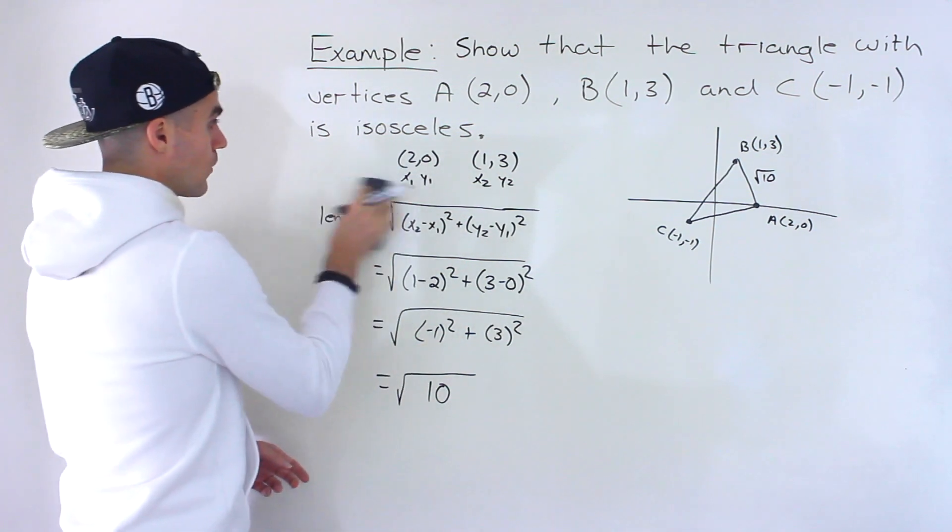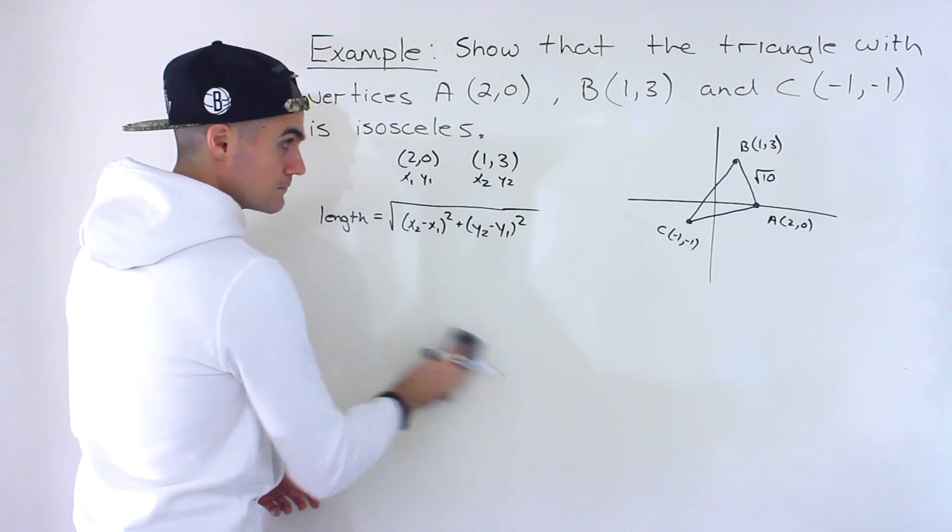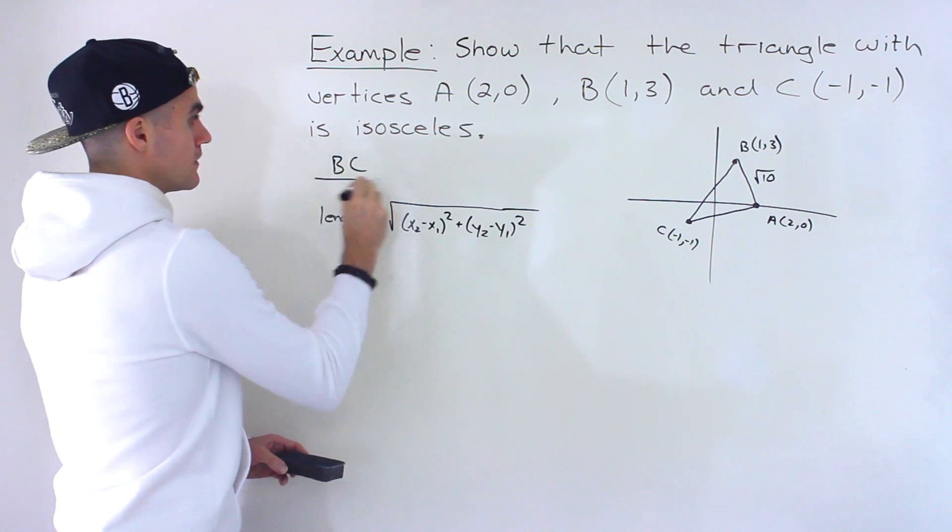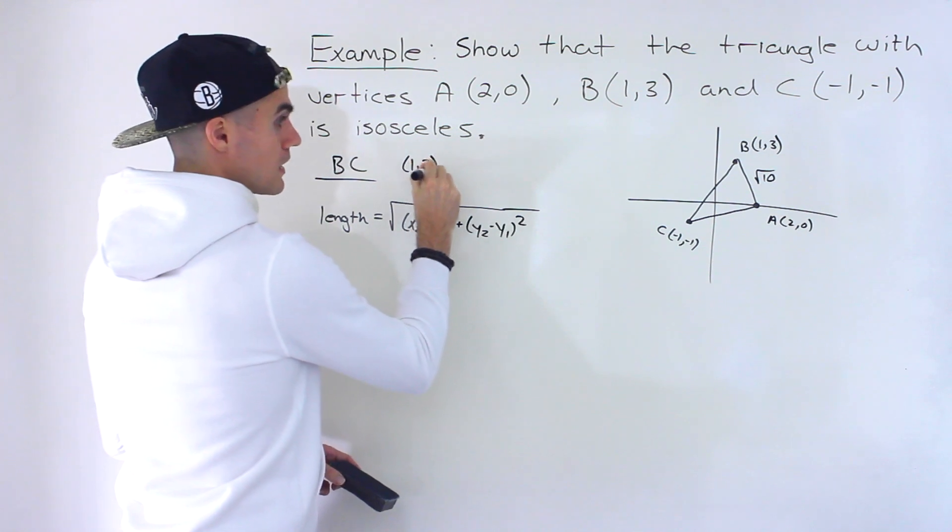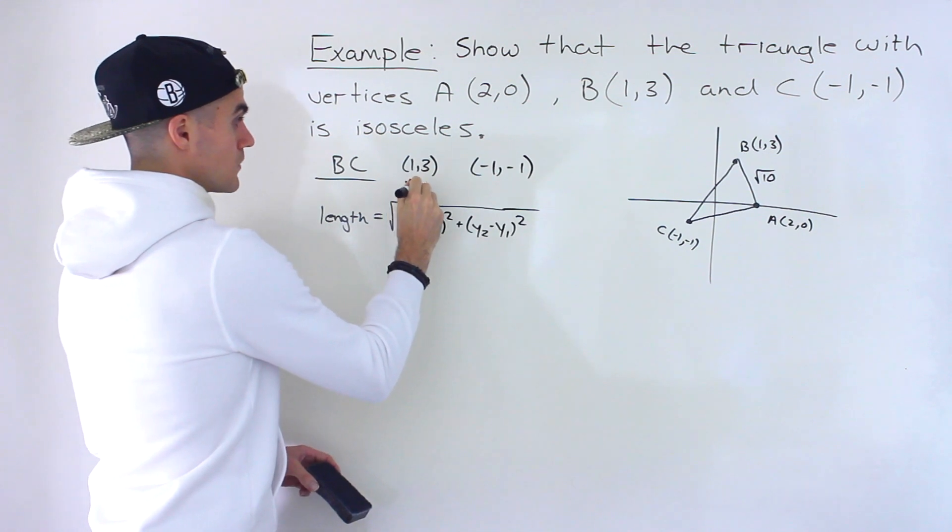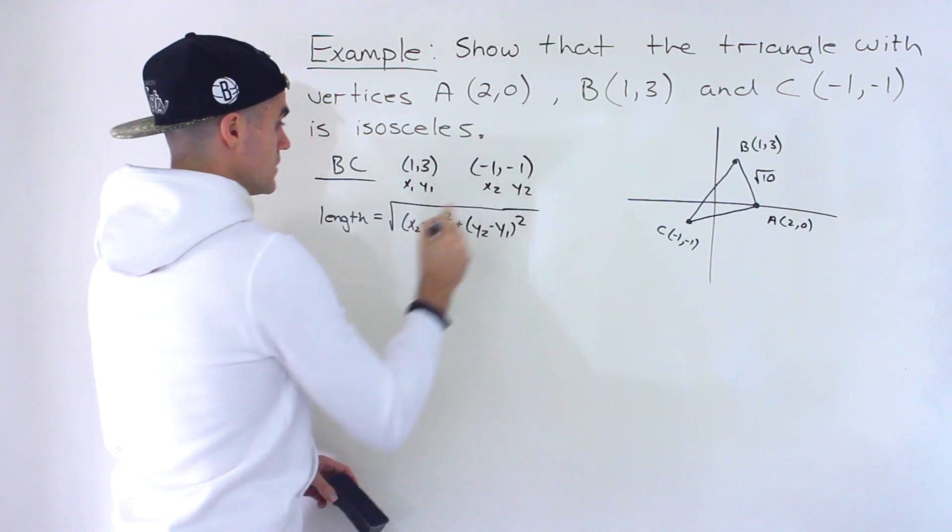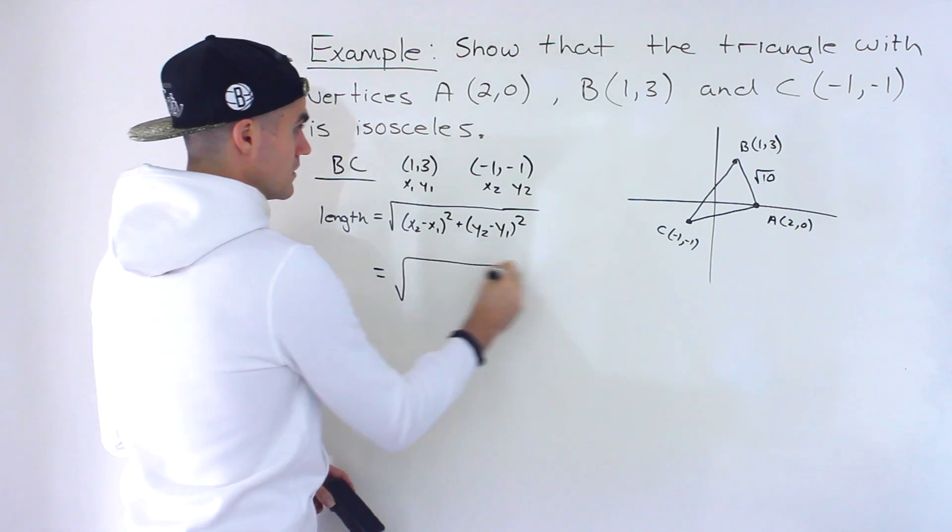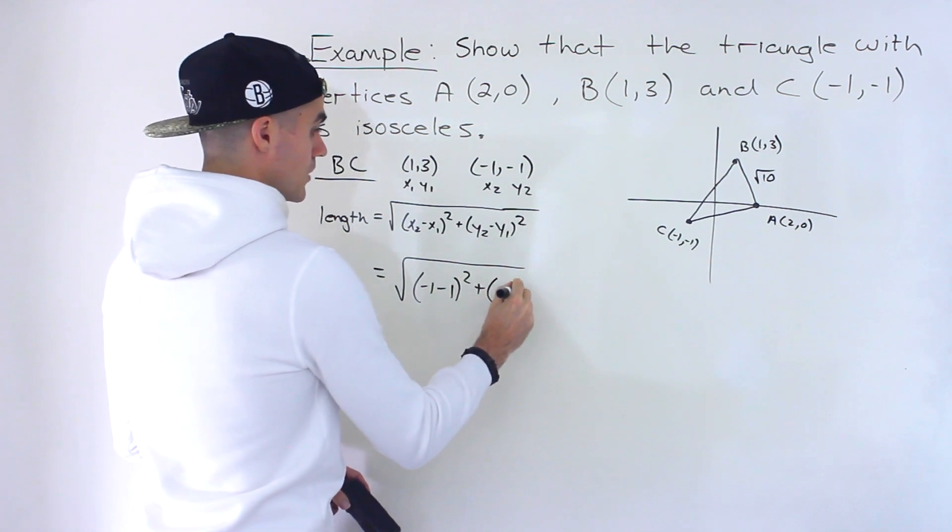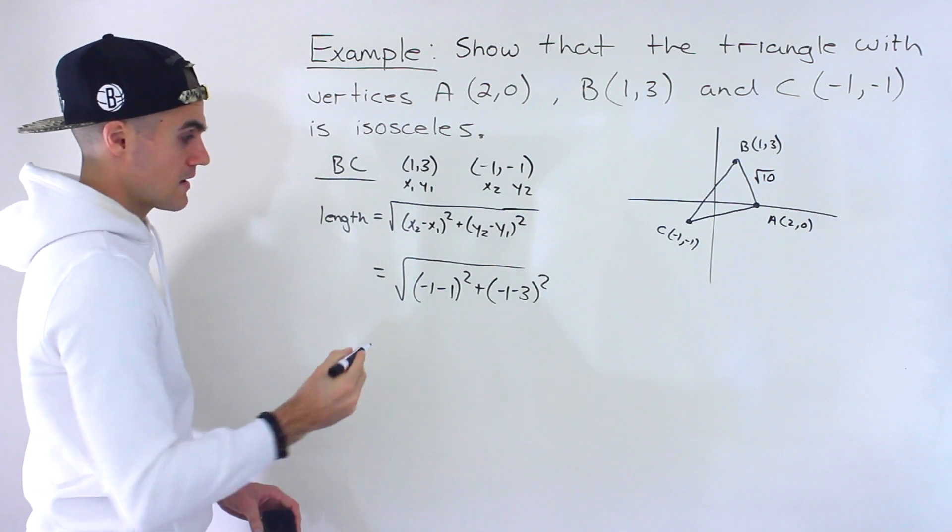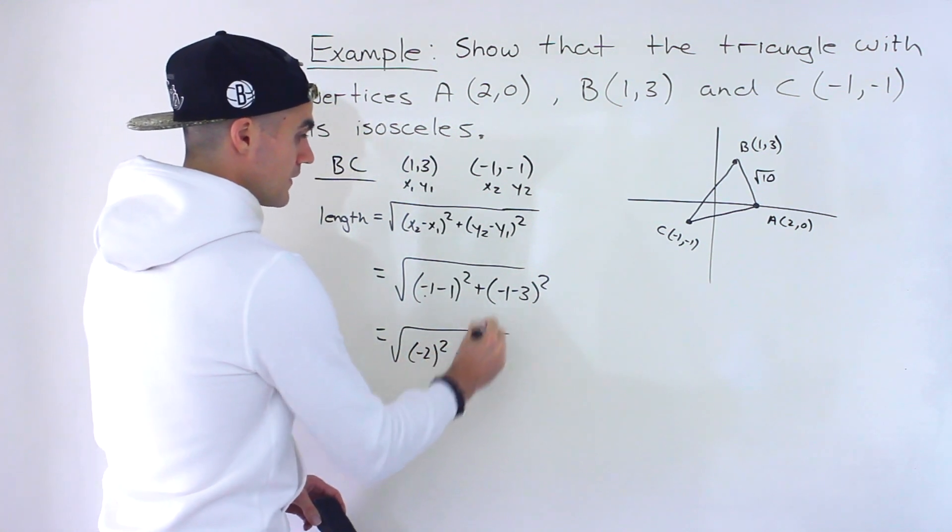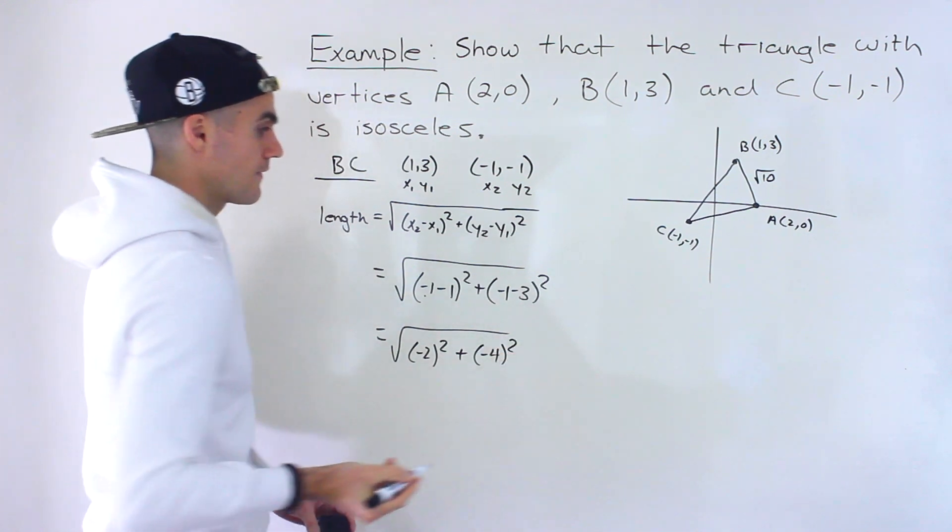Okay, now let's get the length for BC. So with line BC, we're going to be using the points (1,3) and then (-1,-1). So I'm going to let this be x₁ y₁, x₂ y₂. Be careful with the negatives here. So we'd have -1 minus 1 squared plus -1 minus 3 squared like that. Now -1 minus 1 would give us -2, that's going to be squared. Then -1 minus 3 would give us -4, and then that's going to be squared.